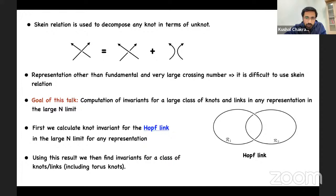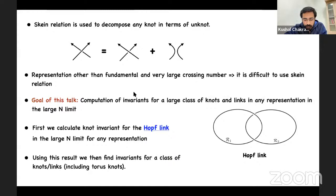One can decompose a complicated knot using skein relations — essentially untying the crossings — in terms of unknots. However, using skein relations beyond the fundamental representation is very difficult. Although there is a vast literature where people have calculated knot invariants for different classes of knots with simple representations, calculating a knot invariant for any arbitrary representation remains a challenging problem.